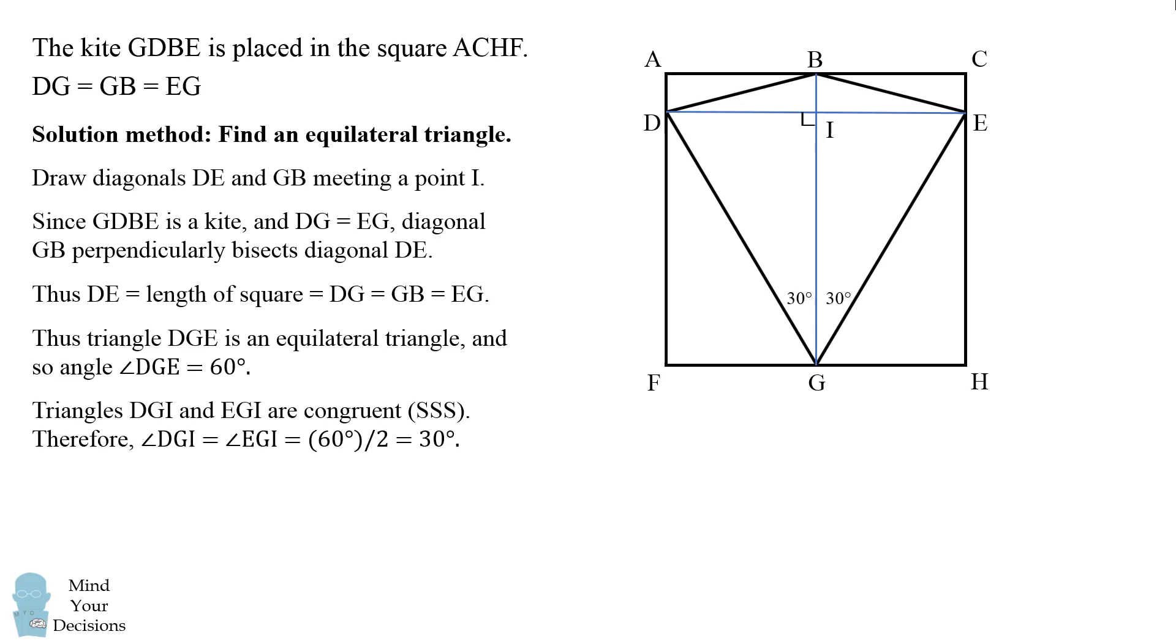So we've once again figured out these angles are 30 degrees each, and we can proceed just like in the last proof, where we have congruent isosceles triangles, and we can figure out the value of X from there. We'll again get 150 degrees.